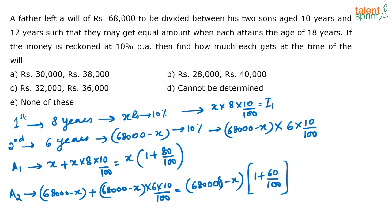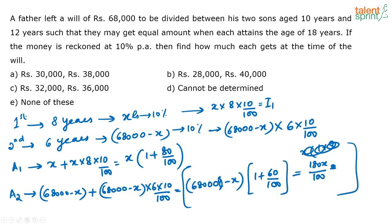What is given in the question is that these two amounts are the same. So you equate them: X into 180 by 100 equals 68,000 minus X into 160 by 100, and you find the value of X. You can also look at the options and arrive at the answer — that would be a faster way to solve this question.